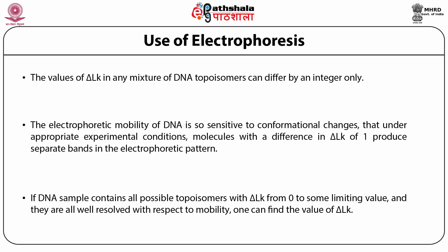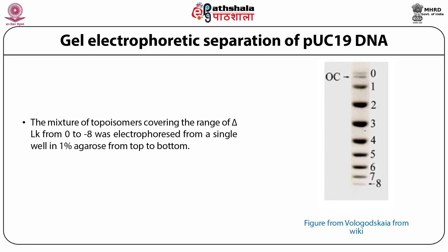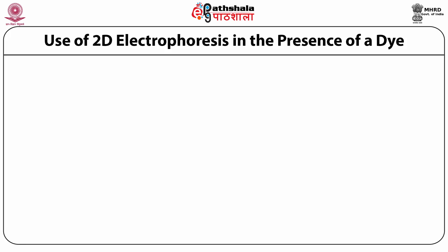If a DNA sample contains all possible topoisomers with delta LK from 0 to some limiting value and they are all well resolved with respect to mobility, one can find the value of delta LK. We show in this picture gel electrophoretic separation of a pUC19 DNA combination. The mixture of topoisomers covering the range of delta LK from 0 to minus 8 was electrophoresed from a single well in 1% agarose from top to bottom.